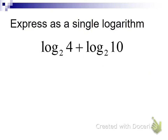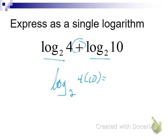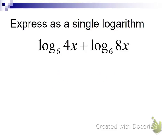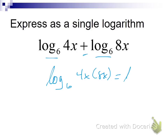Same thing here — same log base. Addition leads to multiplication, so I merge this into one logarithm and make this 4 times 10, or log base 2 of 40. Nothing changes if variables are introduced — same log, same log bases. Since we're adding, addition leads to multiplication. So I'm going to take 4x times 8x and make this log base 6 of 32x².